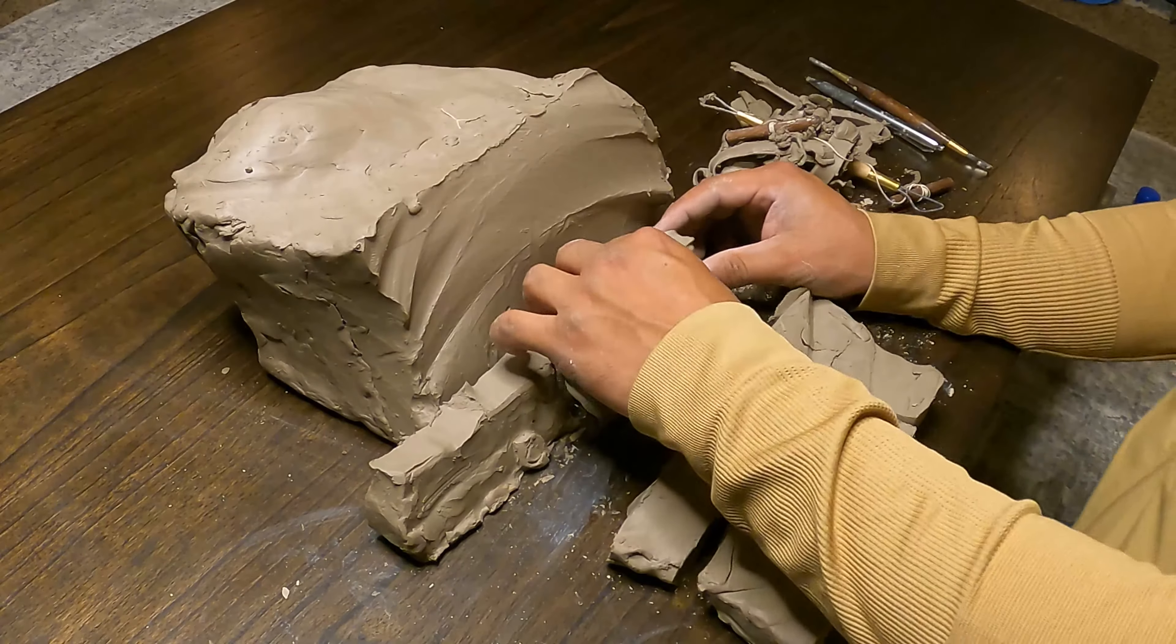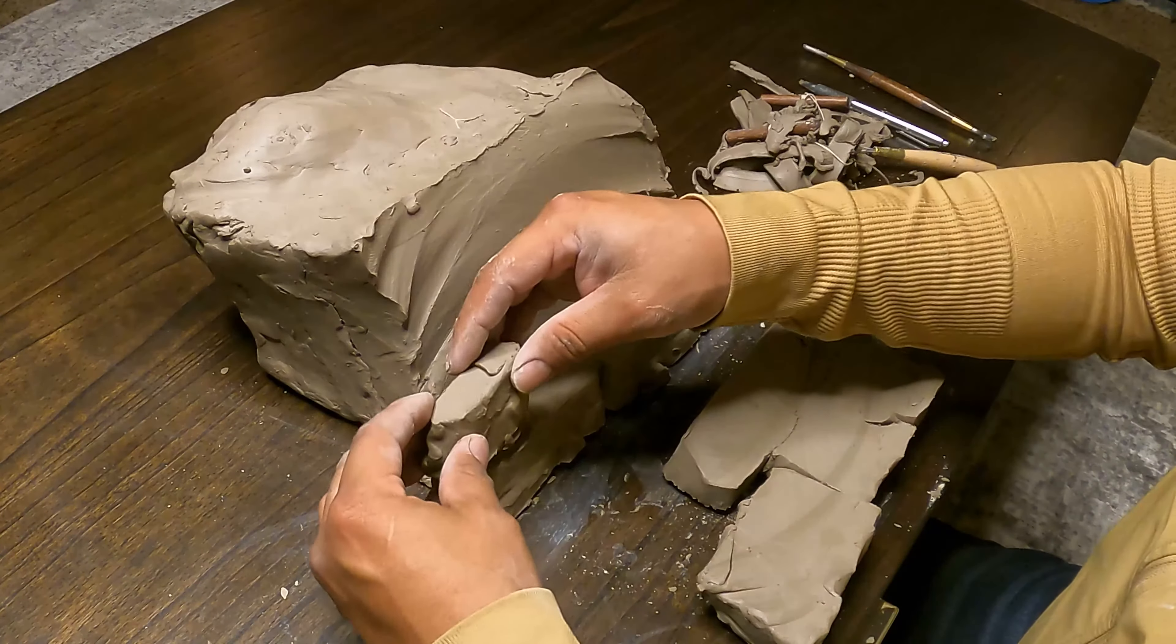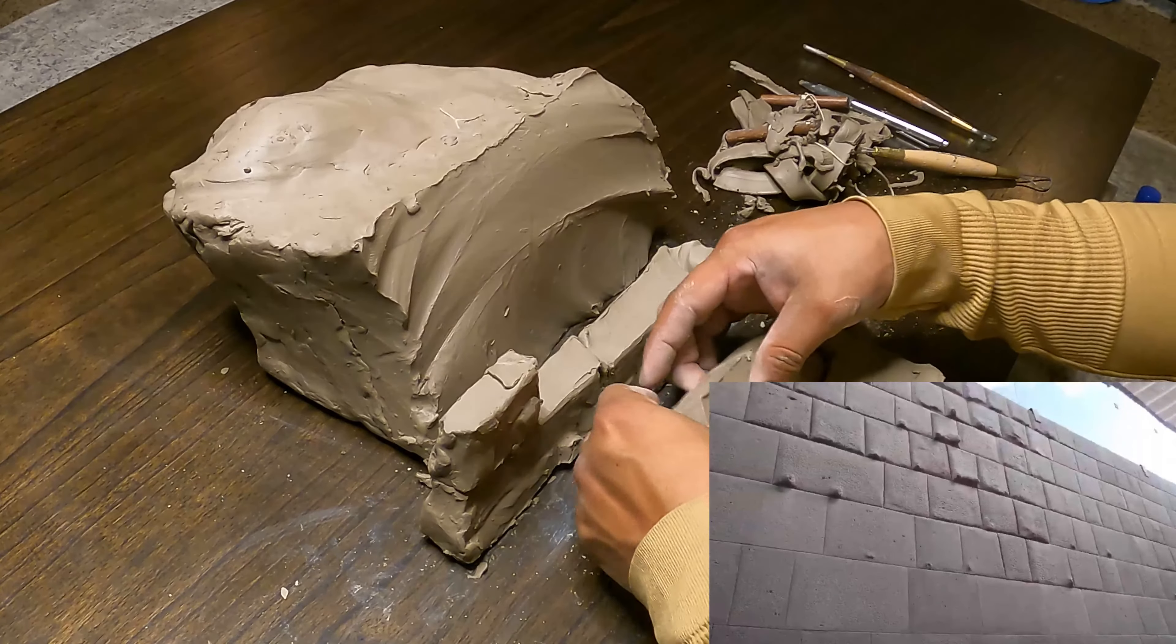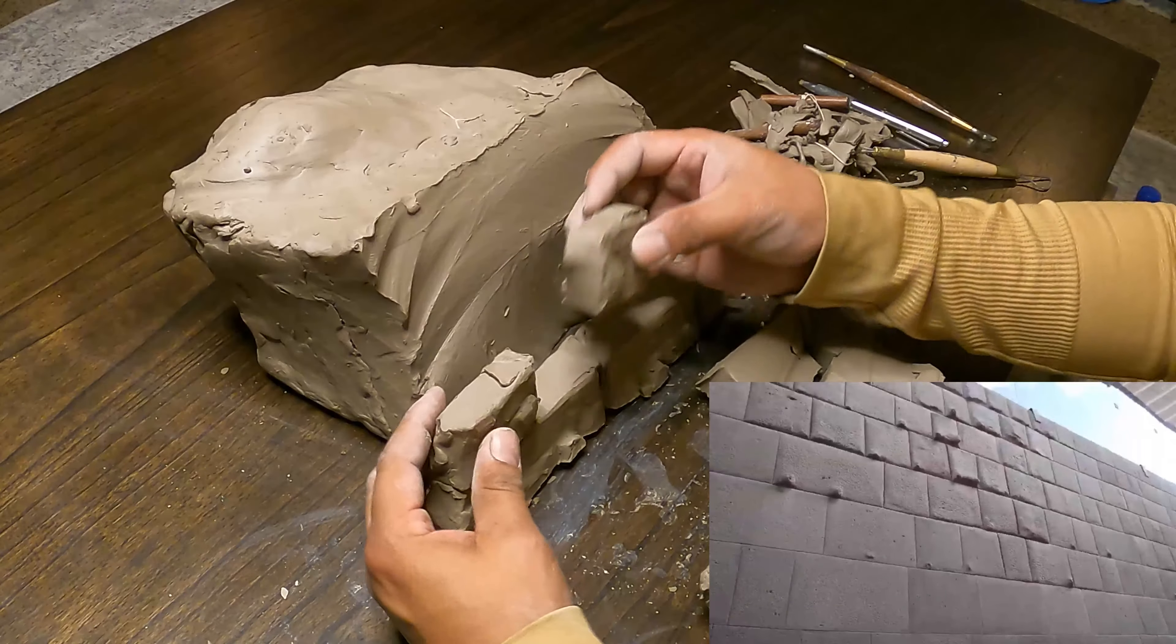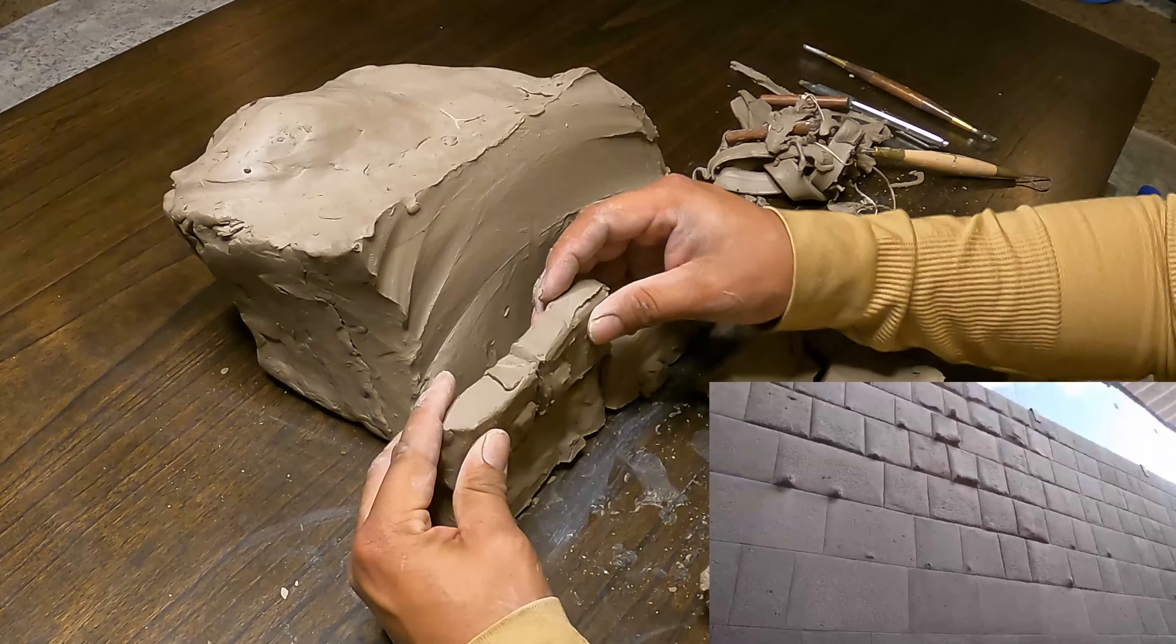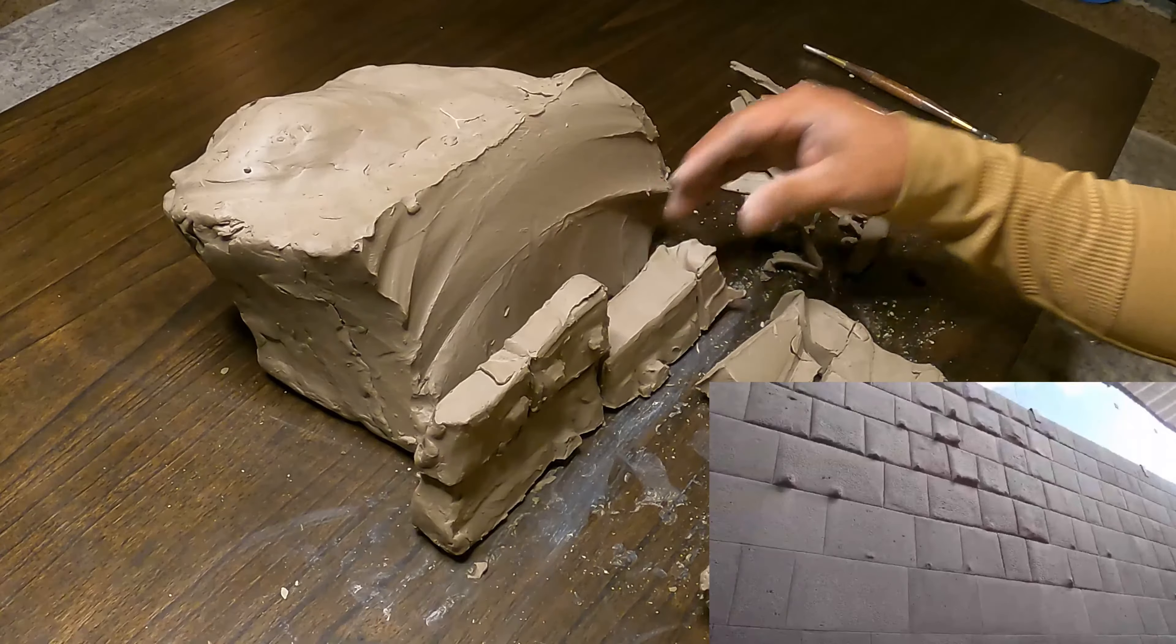I think those protrusions help that break. Those knobs are right on that break line so it's going to be the first thing to hit the ground, and it's going to really jack those stones and help them break along those score lines.